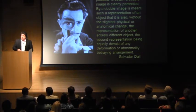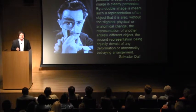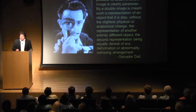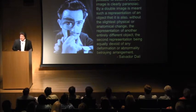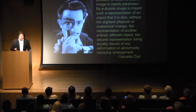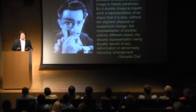This really convinced Dali that he was absolutely right about this idea of objective subjectivity — the paranoid critical method — the idea that you could have hallucinations that could lead to new discoveries that were true for you, and you could convince somebody else of that reality even if it wasn't there to begin with. He goes on to say that the way it's been possible to obtain a double image is clearly paranoiac. By a double image, it's meant such a representation of an object that it is also, without the slightest physical or anatomical change, the representation of an entirely different object, the second one being equally devoid of any deformation.